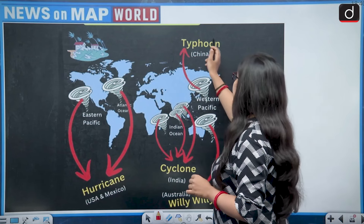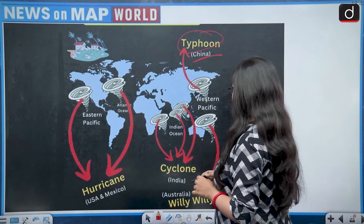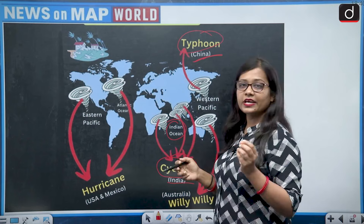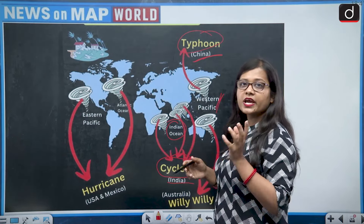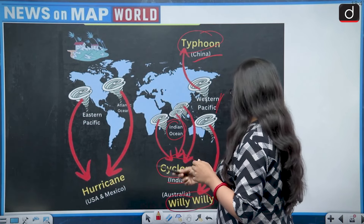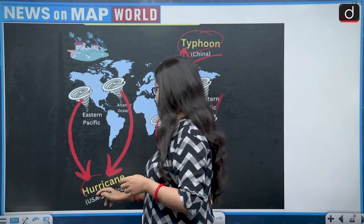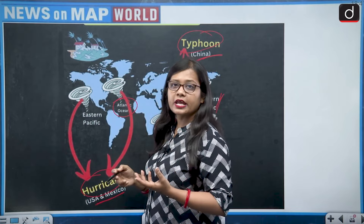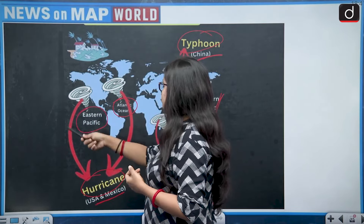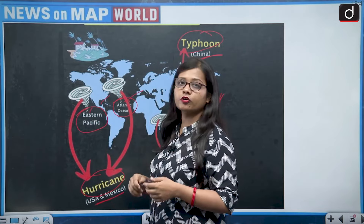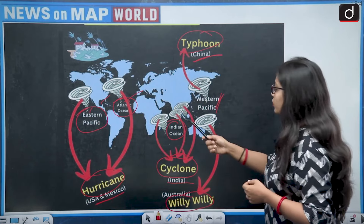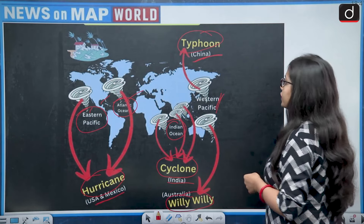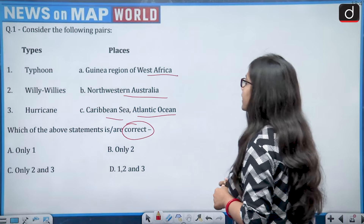Cyclones are referred to by different names in different regions. For example, it is called typhoon in China, cyclone in the Indian Ocean region, willy-willy in Australia and the western Pacific, and hurricane in the US or Mexico region — that is the Atlantic Ocean, Caribbean Sea, and eastern Pacific.